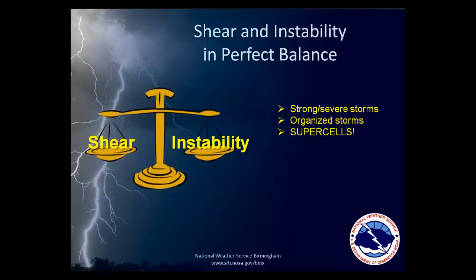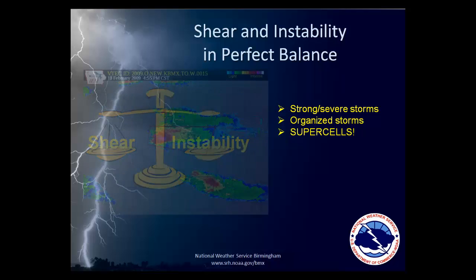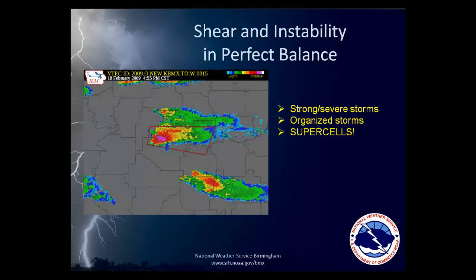When the instability and wind shear are both strong enough and in perfect balance, thunderstorms become so organized that they last for several hours and begin to rotate. These are the supercell thunderstorms, which produce a majority of the tornadoes in central Alabama. The supercell in the middle of this image moved from west to east across a large portion of central Alabama, maintaining its strength and rotation for several hours. We'll see this particular storm in more detail in section two.